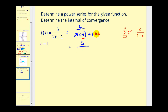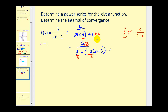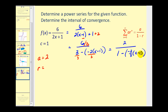Rewriting, we'll have six in the numerator and three minus negative two times the quantity x minus one in the denominator. Since the denominator must be in the form of one minus r, this three must become a one, so we divide everything by three. This gives us two in the numerator divided by one minus negative two-thirds times the quantity x minus one. In this form, a equals two and r equals negative two-thirds times the quantity x minus one.